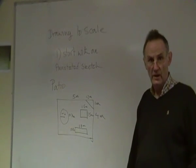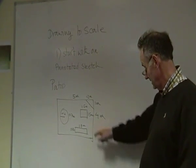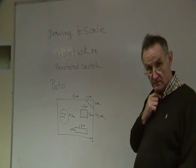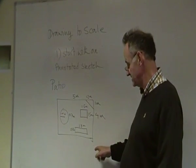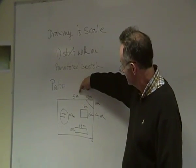Drawing to scale. We start with an annotated sketch. Here's an example - this is for drawing a patio. In this case, the annotations are the dimensions of my proposed patio. It's going to be 5 meters by 4 meters.